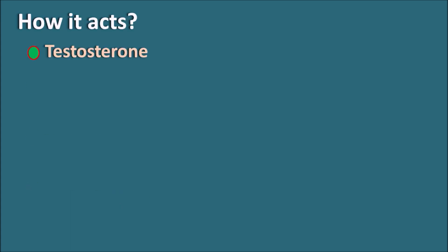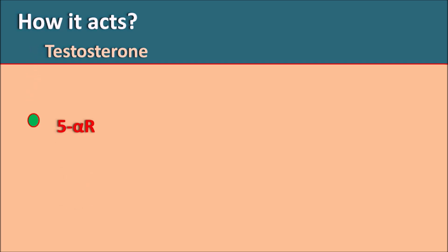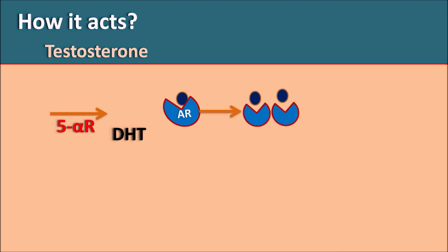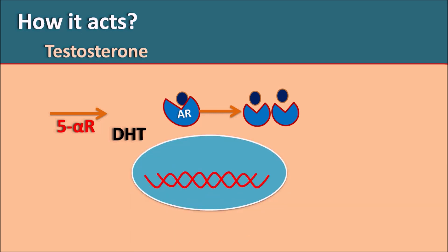Testosterone enters cells where it is converted into its active form by 5-alpha reductase enzyme, producing dihydrotestosterone. Dihydrotestosterone acts on androgen receptors present within the cytoplasm. Once DHT binds to these receptors, they undergo dimerization and autophosphorylation, after which they enter the nucleus.